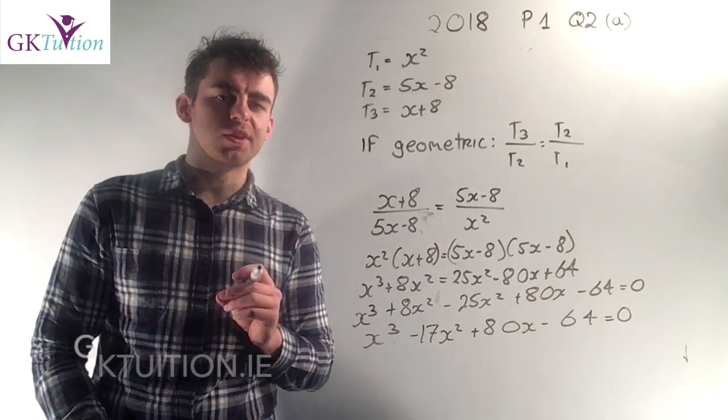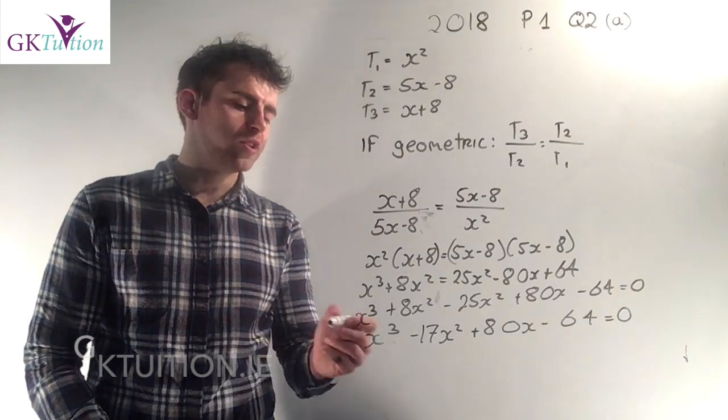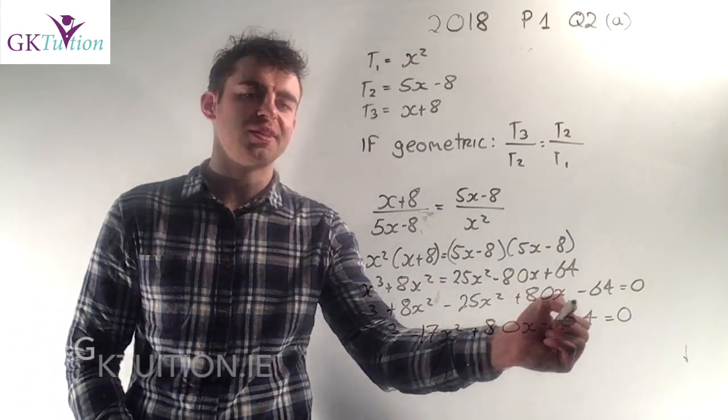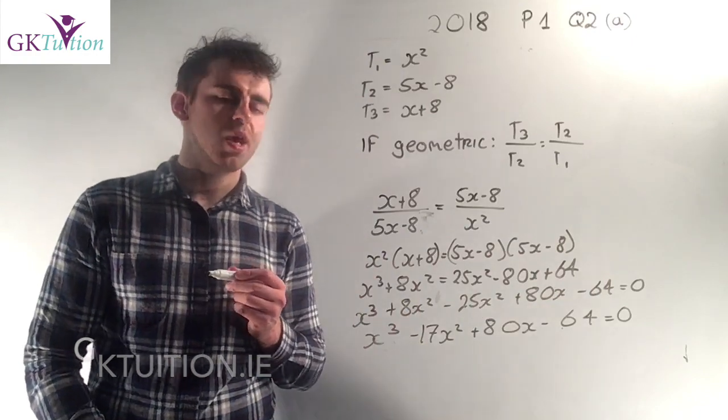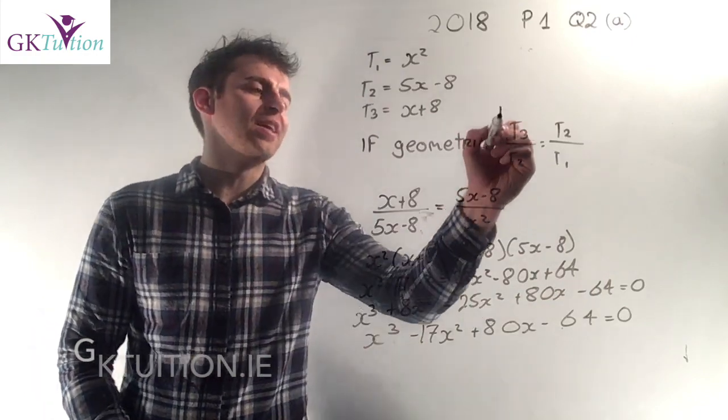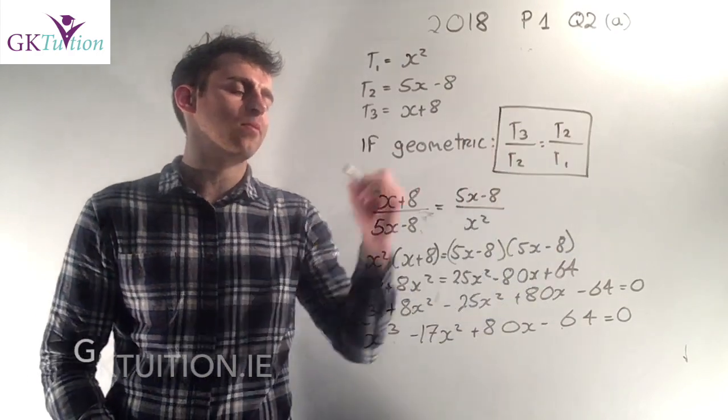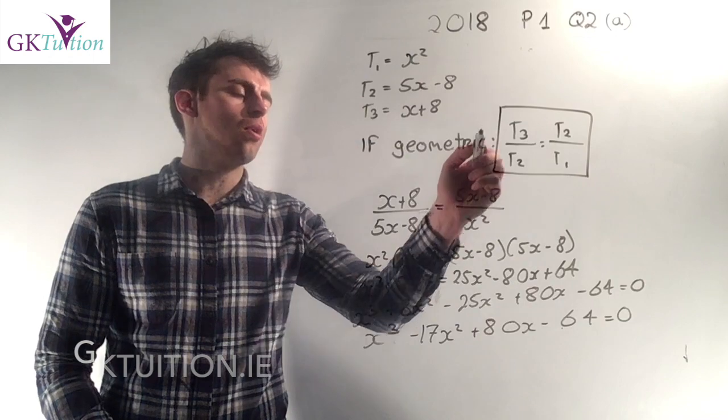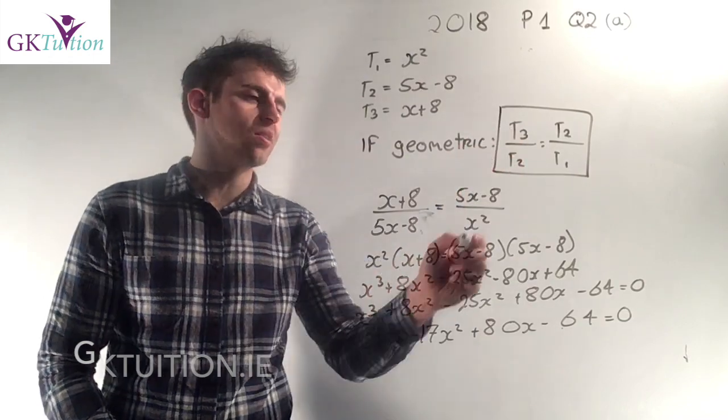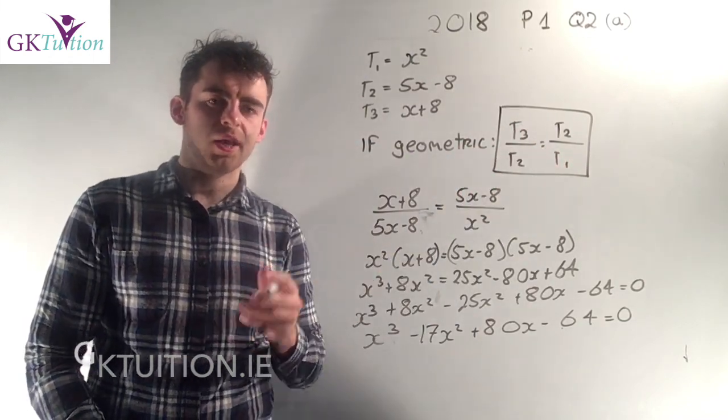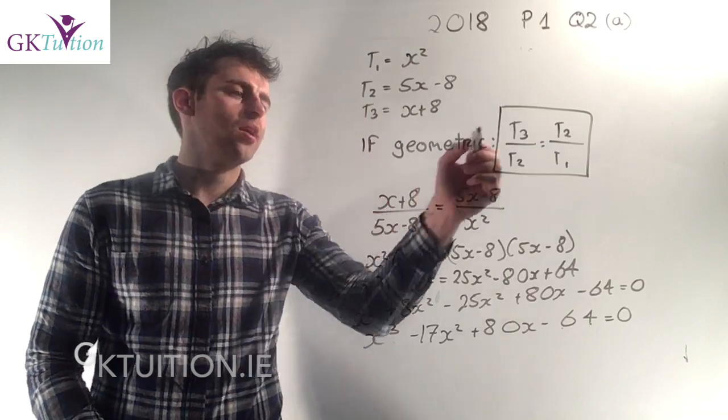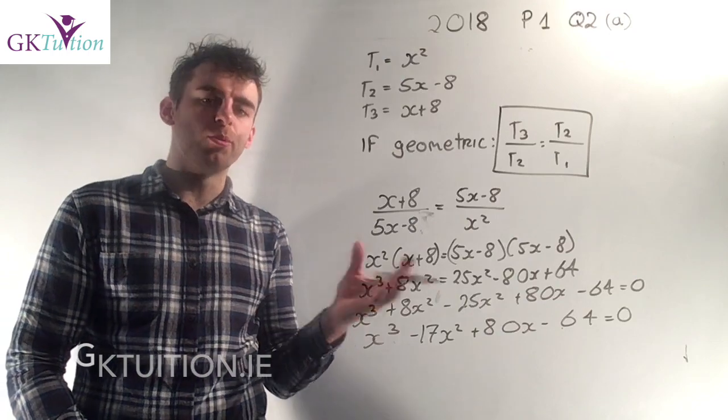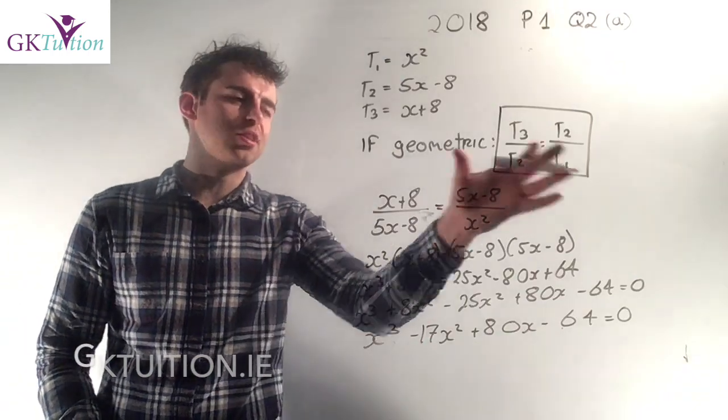The question says use the common ratio to prove that x cubed minus 17x squared plus 80x minus 64 is equal to zero. What they mean by use the common ratio is use your learning work from sequences and series. If a sequence is geometric, you know that the third term divided by the second term equals the second term divided by the first term. In other words, there's a common ratio. t3 over t2 equals t2 over t1. So in order to come up with an equation here we just need to sub into this.